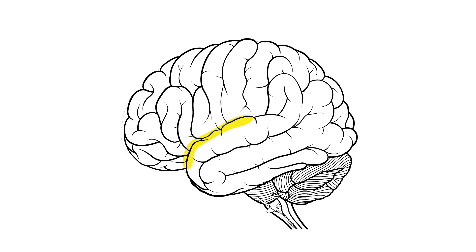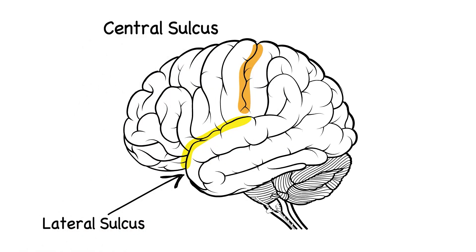Of note is this deep groove known as the lateral sulcus, or sulci in plural. Another groove here is known as the central sulcus. The consistency of the central sulcus and lateral sulcus across human brains help to give rise to the concept of lobes.